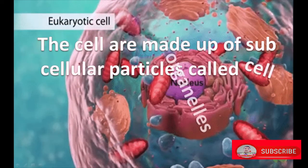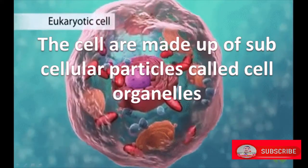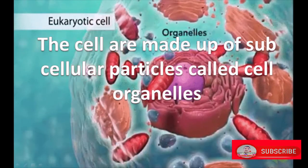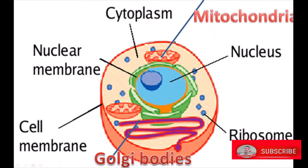Cells are made up of subcellular particles called cell organelles. Various cell organelles are cytoplasm, nucleus, ribosome, Golgi bodies, cell membrane, and some organelles present in plants like plastids and cell wall.